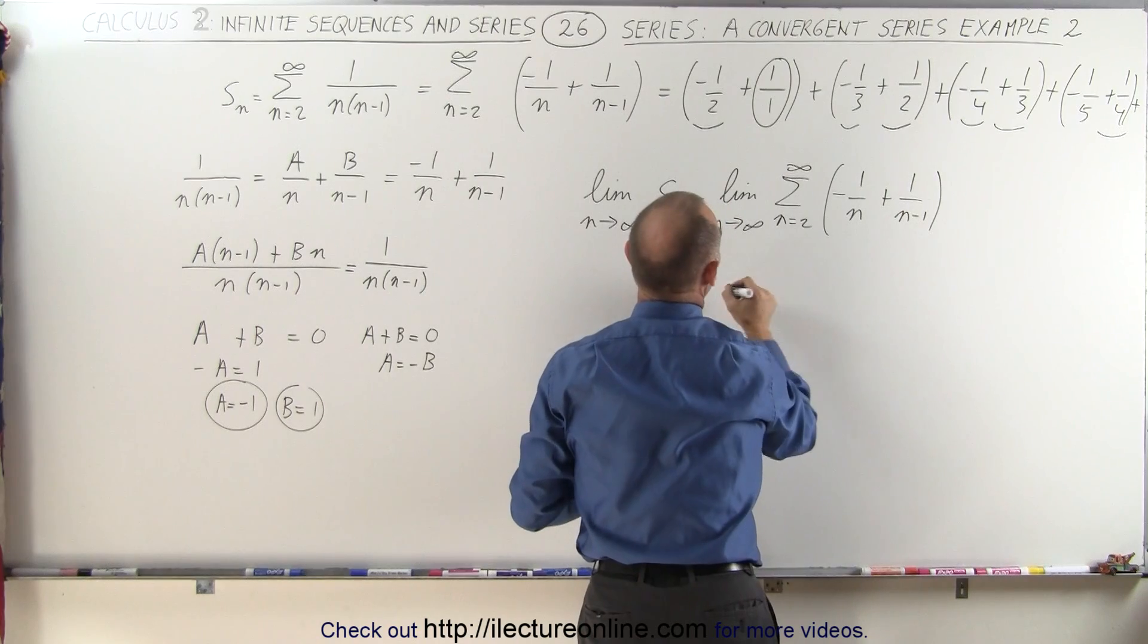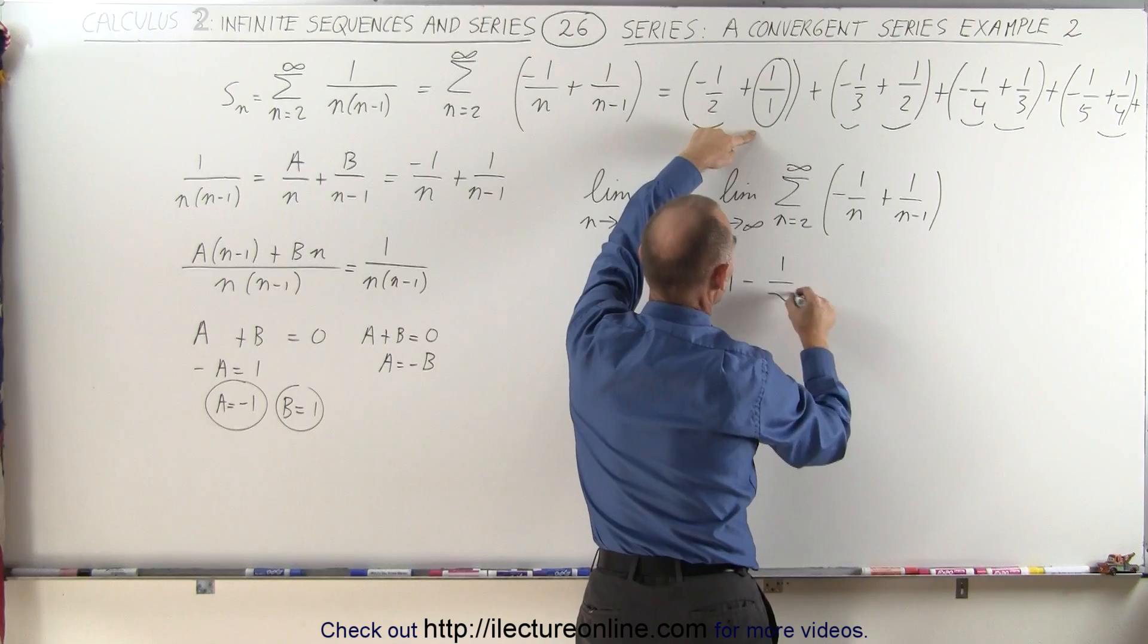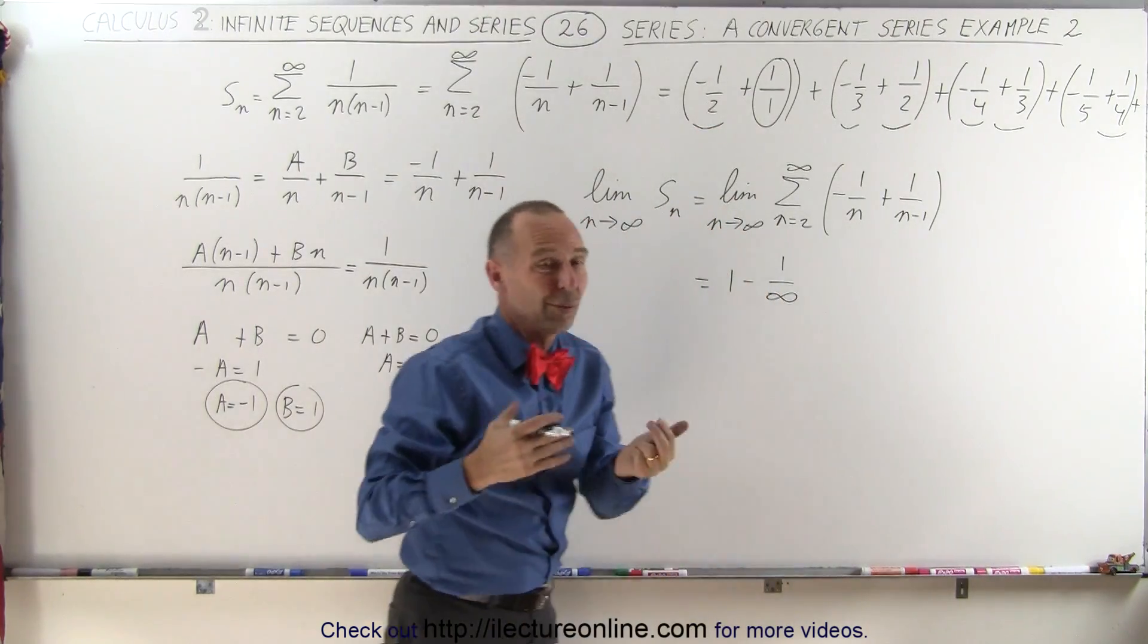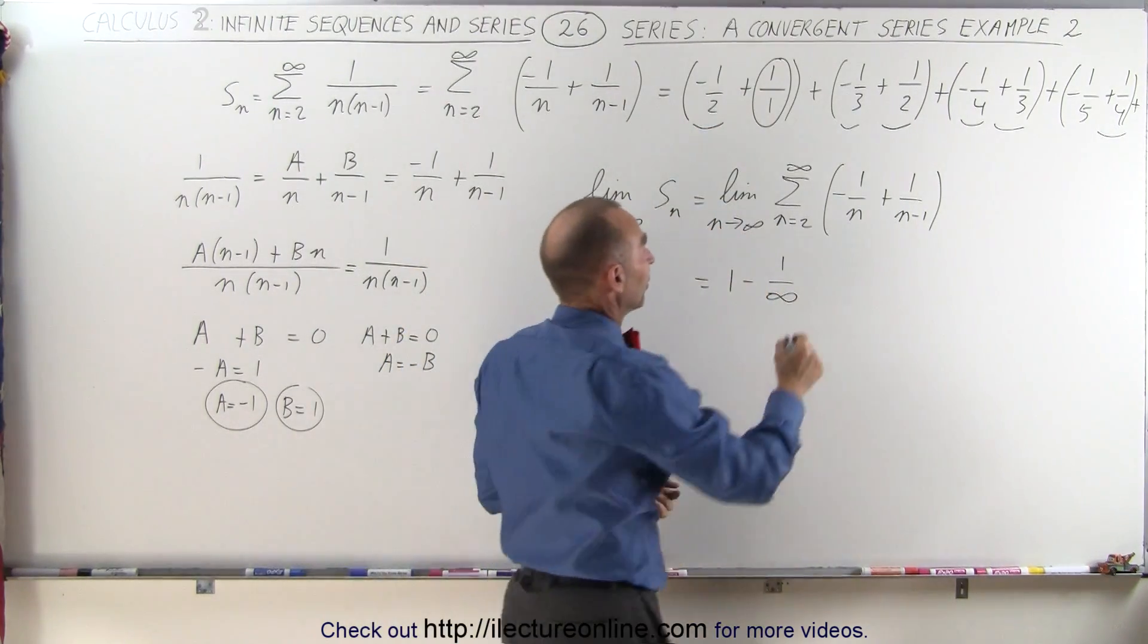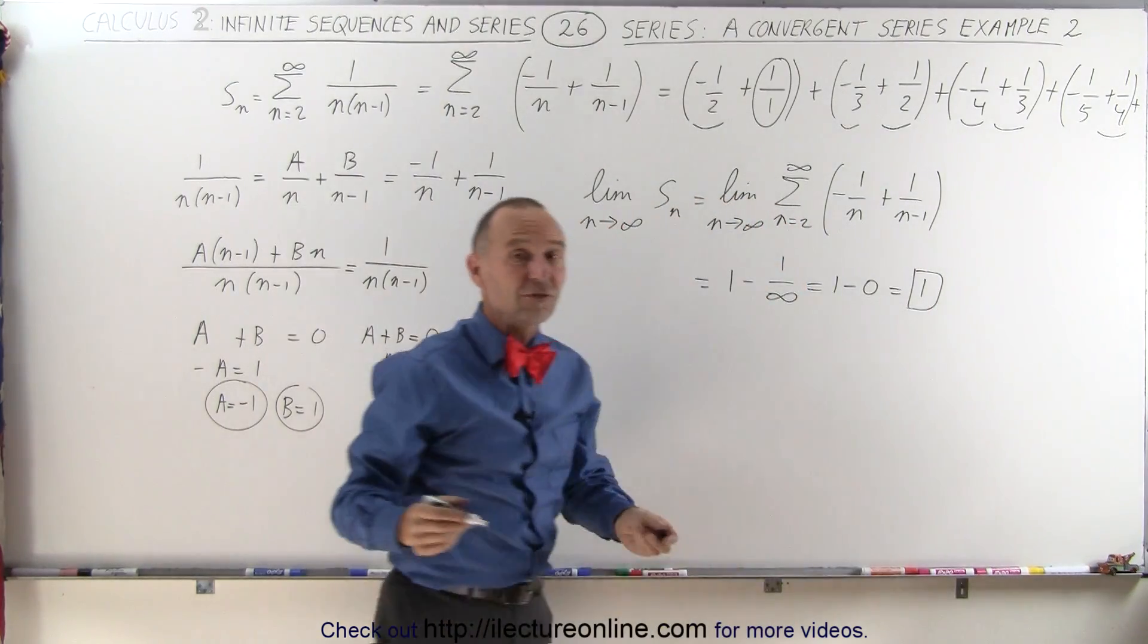In the limit as n goes to infinity, we'll end up with just 1 minus 1 divided by infinity. And of course, minus 1 over infinity is 0.